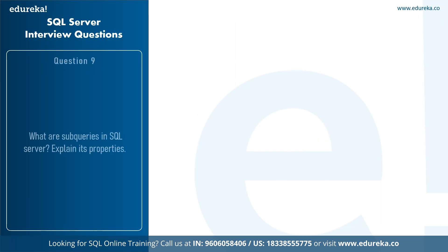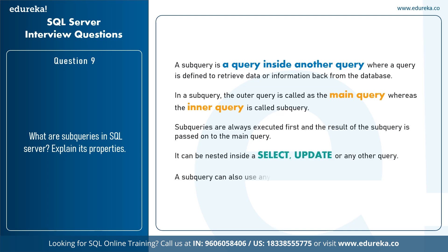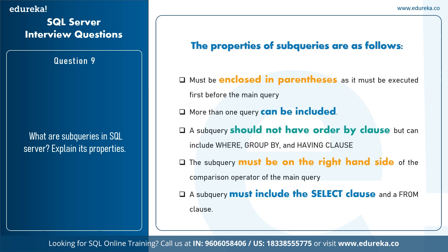The next question is: what are sub queries in SQL Server and what are a few properties? A sub query is a query inside another query, where the outer query is called the main query and the inner query is called the sub query. Sub queries are always executed first, and their result is passed to the main query. Properties include: must be enclosed in parentheses, executed before the main query, should not have an ORDER BY clause but can include WHERE, GROUP BY, and HAVING clauses, and must include a SELECT clause and a FROM clause.